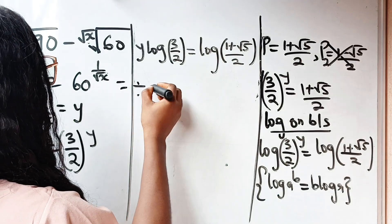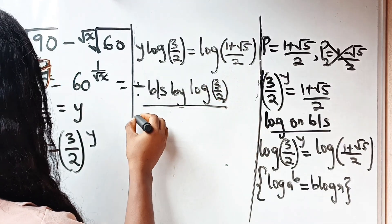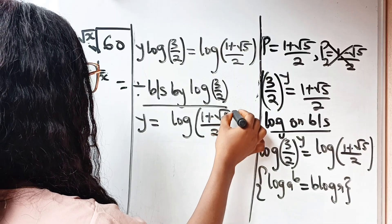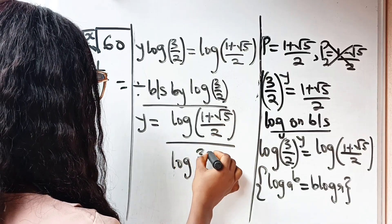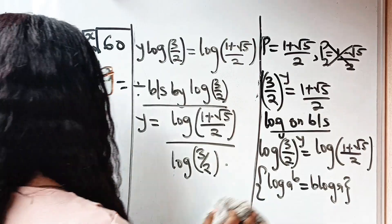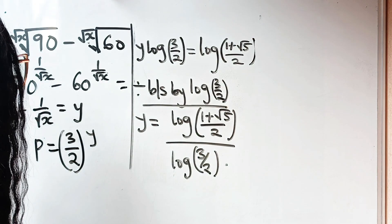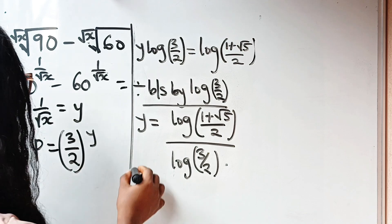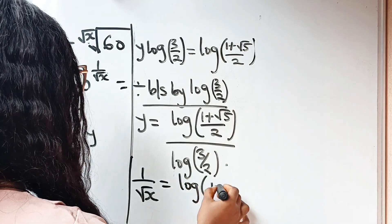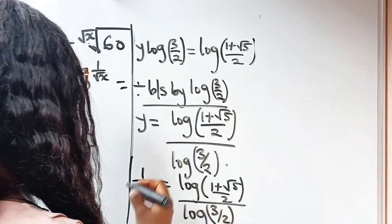We are looking for x, not y. Recall that y equals 1 over root x. So 1 over root x equals log((1 + √5) / 2) divided by log(3/2). Taking the inverse of both sides, root x equals log(3/2) divided by log((1 + √5) / 2).